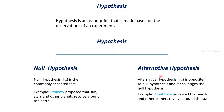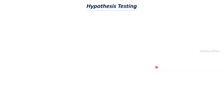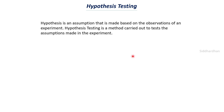We carry out something called hypothesis testing to find whether the null hypothesis is true or the alternative hypothesis is true — that is the purpose of hypothesis testing. Hypothesis is an assumption made based on the observation of an experiment, and hypothesis testing is a method carried out to test those assumptions. We are going to test both assumptions we have made, and this is nothing but hypothesis testing.